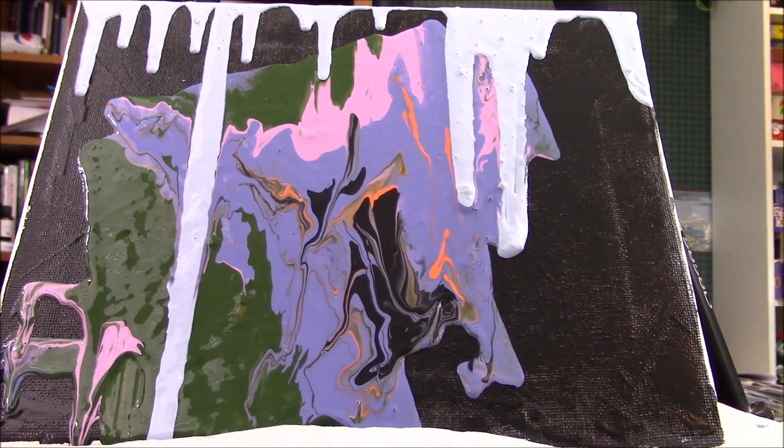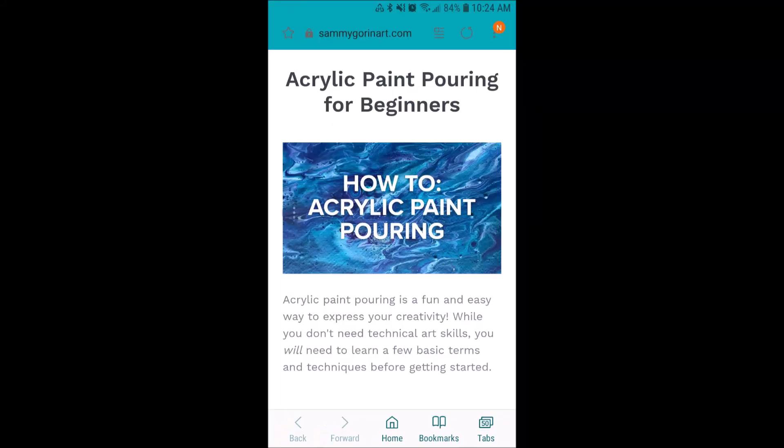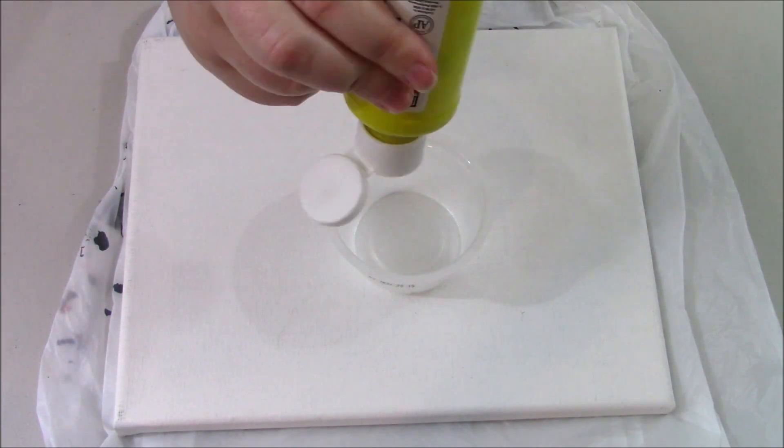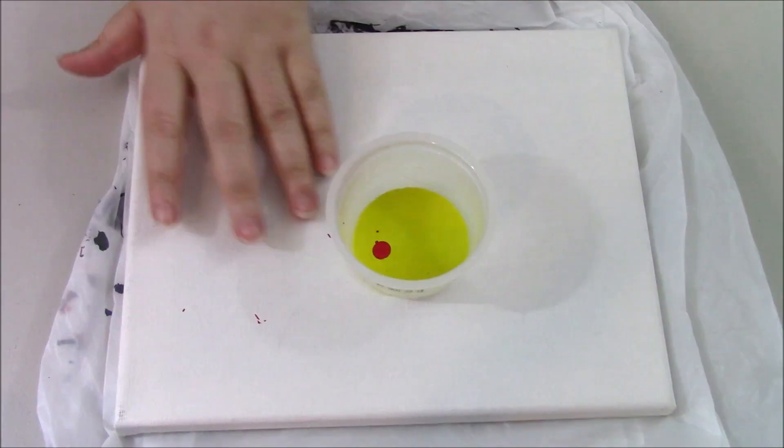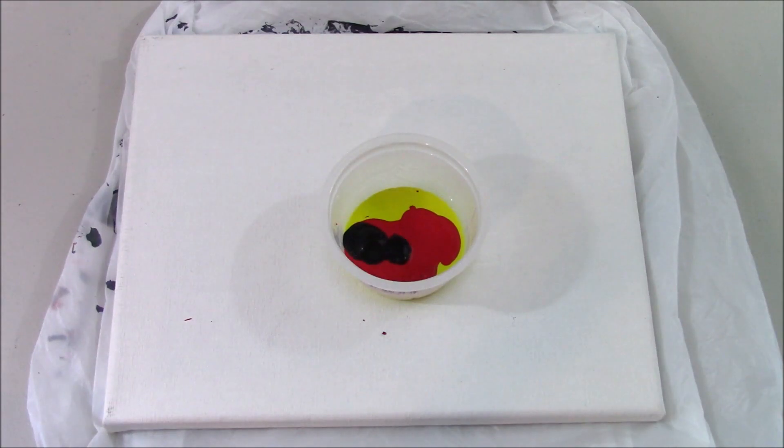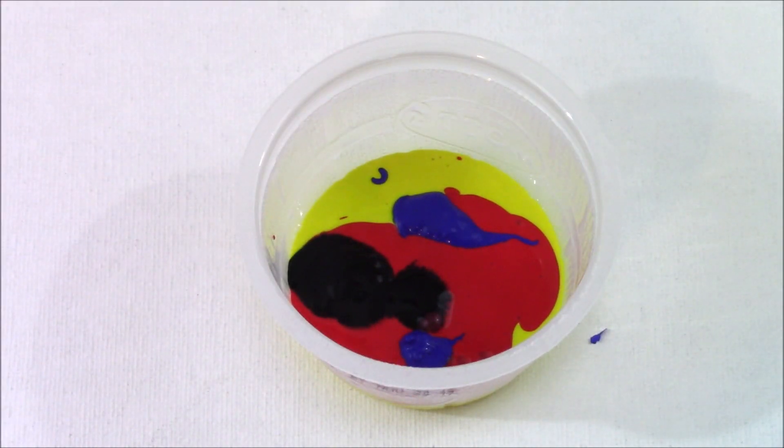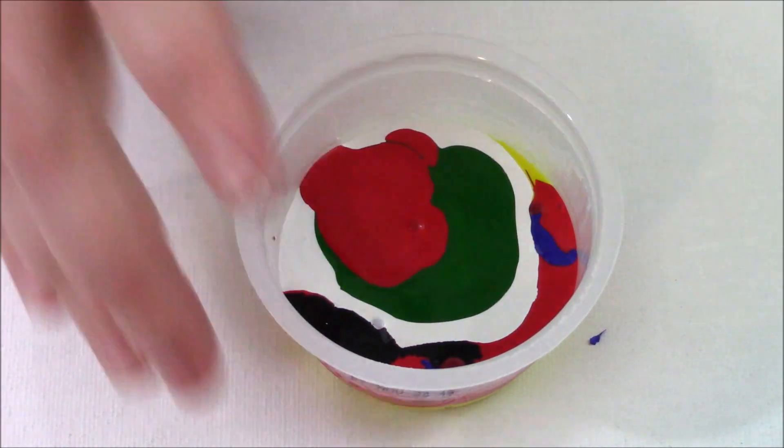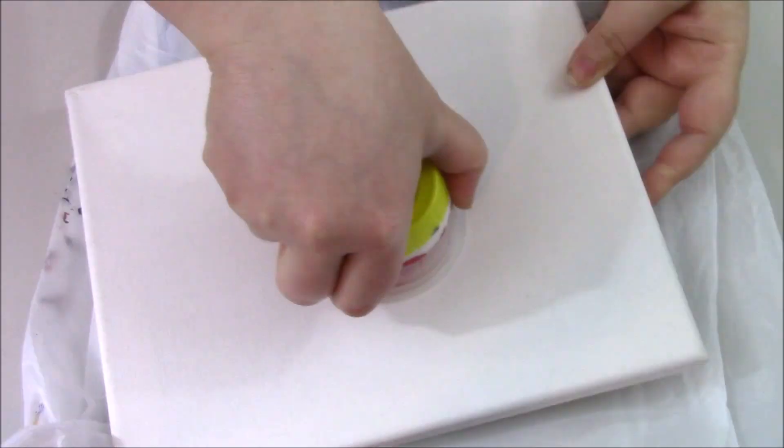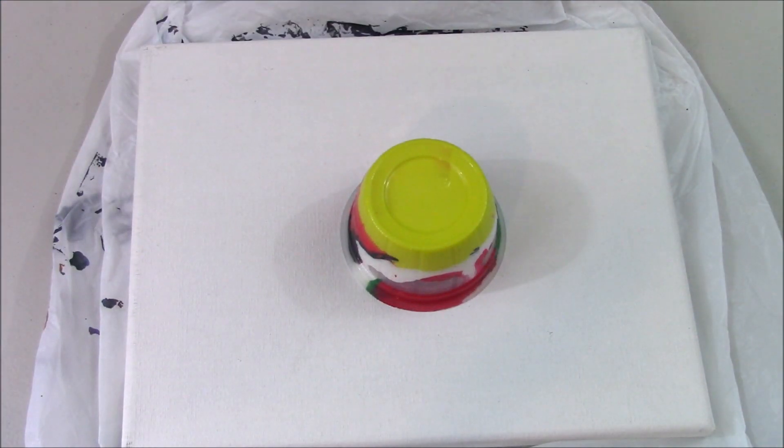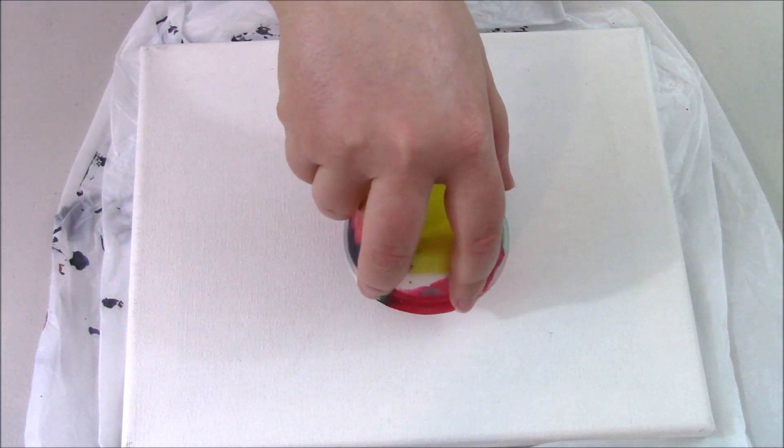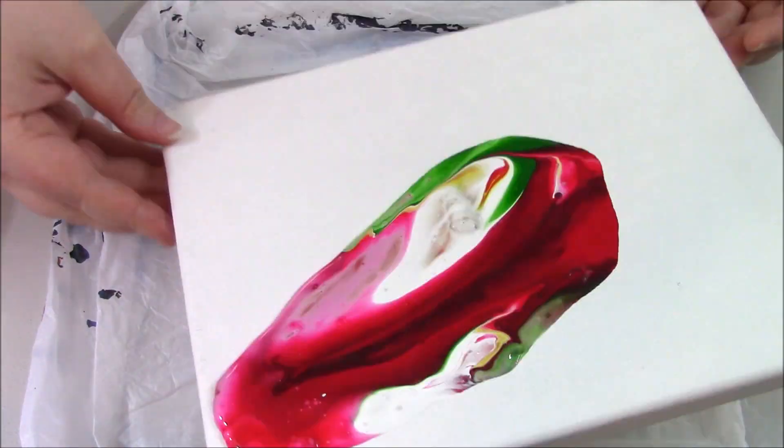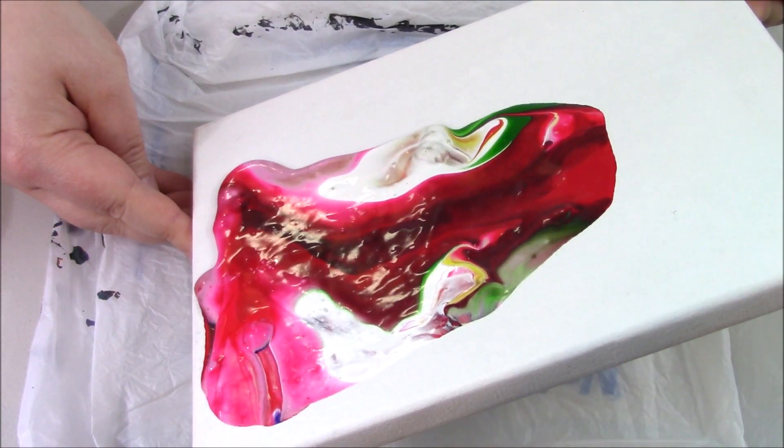So moving on to attempt number two of this technique, I actually did a lot of research, reading, watching videos and learning about the proper not only techniques but also materials. This is not the perfect materials. I decided to use tempera paints because again, I had a bunch of those sitting around for a few years and I knew that they were more liquidy without having to add anything to them. They're technically a watercolor, so they're not really recommended for this and you'll see why.